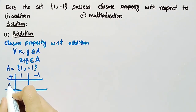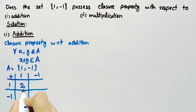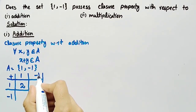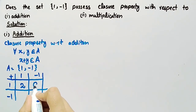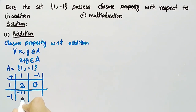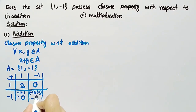In this box, we will add 1 with 1: 1 + 1 = 2. In this box, we will add 1 with -1: 1 + (-1) = 0. Here we will add -1 with 1: -1 + 1 = 0. And here we will add -1 with -1: -1 + (-1) = -2.